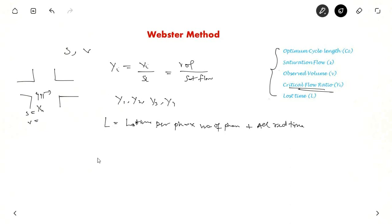So based on these two things, Webster has defined the optimum cycle length. Optimum cycle length is equal to 1.5L plus 5 divided by 1 minus Sigma YI. For two phases it will be Y1 plus Y2. For three phases it will be Y1 plus Y2 plus Y3 and so on.